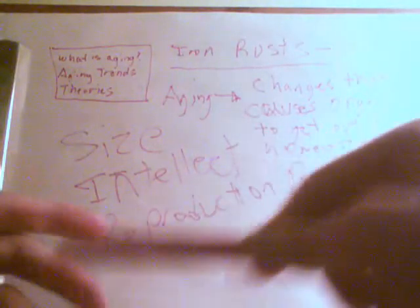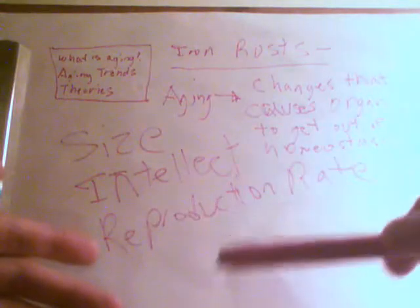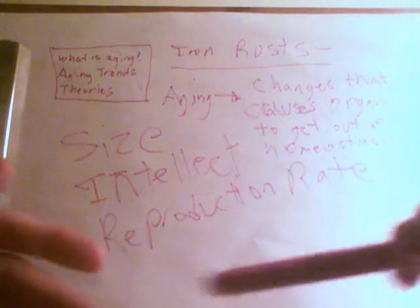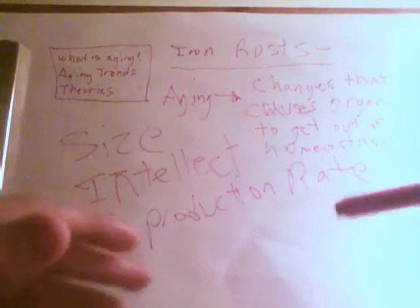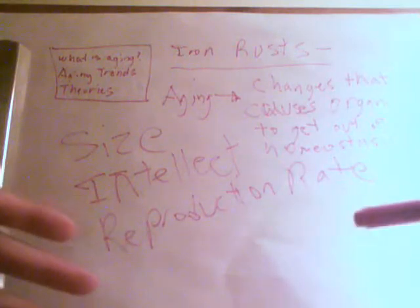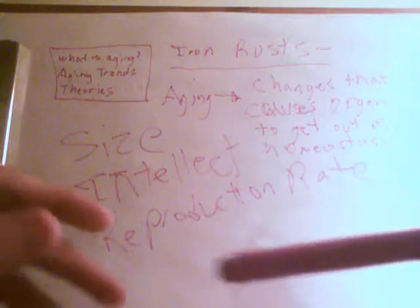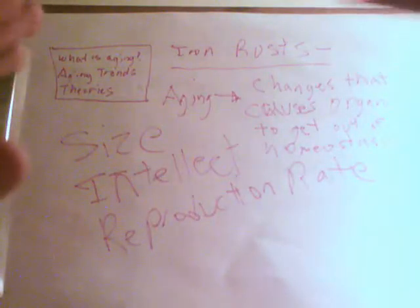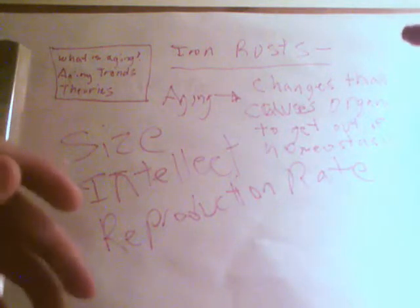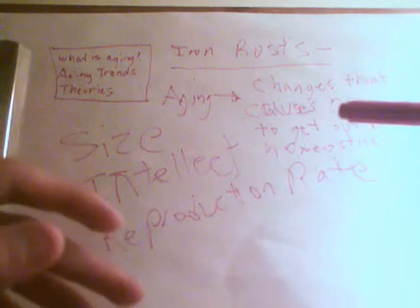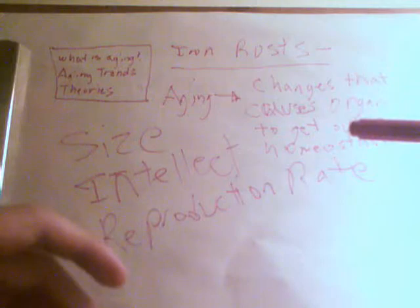Animals that reproduce faster also tend to have a shorter lifespan. Evolutionarily this makes sense, because the purpose of natural selection is to select for traits that carry on to the next generation and allow the species to survive. A species that survives by reproducing quickly doesn't need a long lifespan — think of ants: you get thousands of them in your kitchen, kill them all, and the next day they're all back. So those are three important trends in aging.